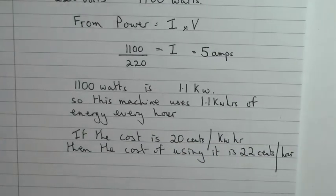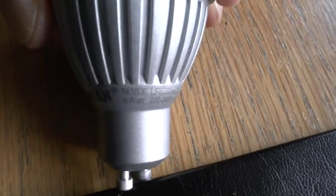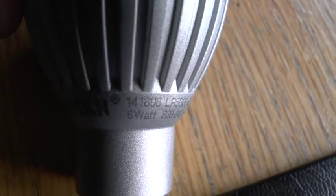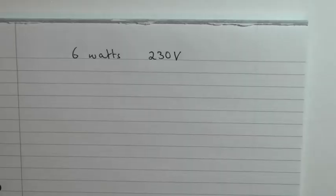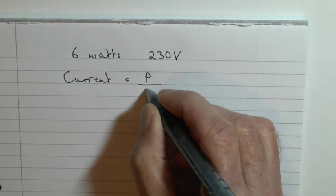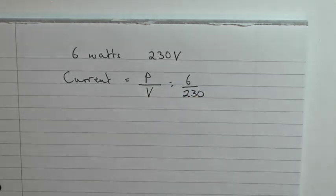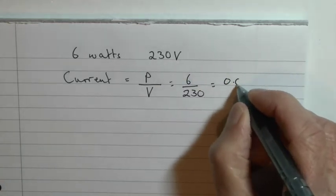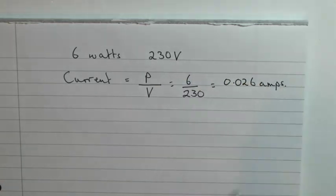The second and final example we're using this diode lamp. It's 6 watts and 220 to 240 volts—we'll take the average at 230. So starting again with power is current times voltage and rearranging, current is power divided by voltage, which is 6 divided by 230, which is 0.26 amps are required.